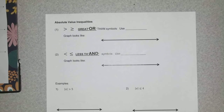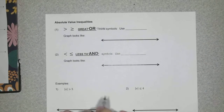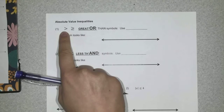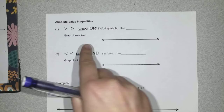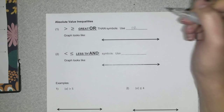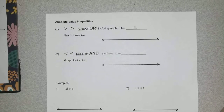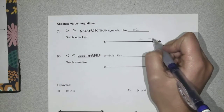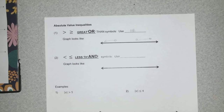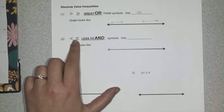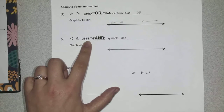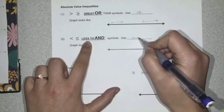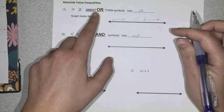Hey everyone, I just wanted to go over absolute value inequalities. Quick review of the symbols: if you have the absolute value of something that is greater than, that means you're going to have an 'or' inequality — write 'or' down to remind yourself. If you have less than or less than or equal to, you're going to have an 'and' inequality. Less than means 'and,' greater than means 'or.'